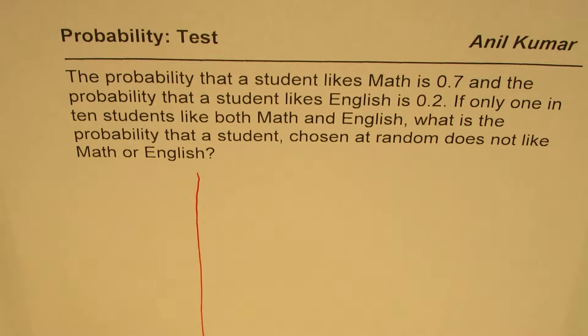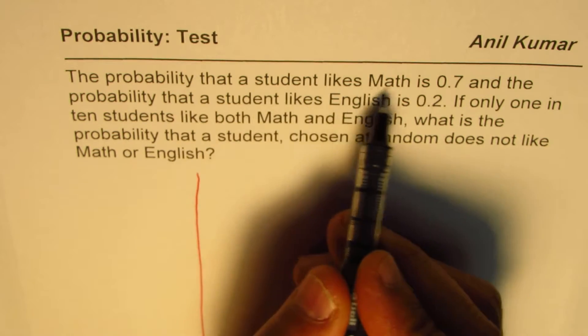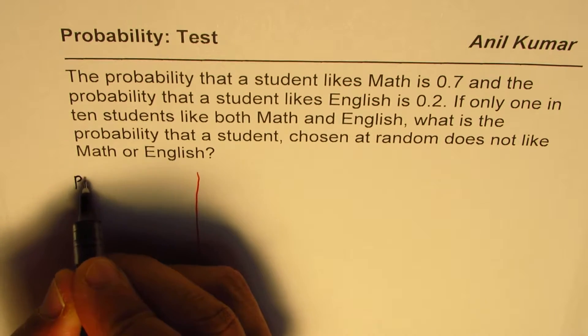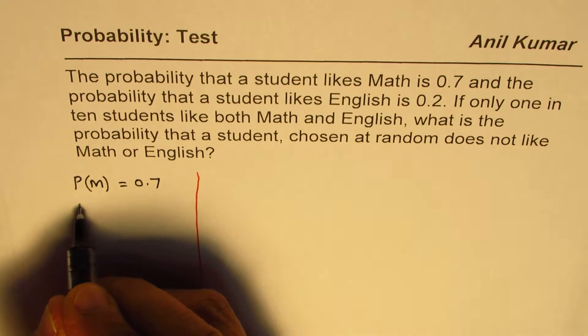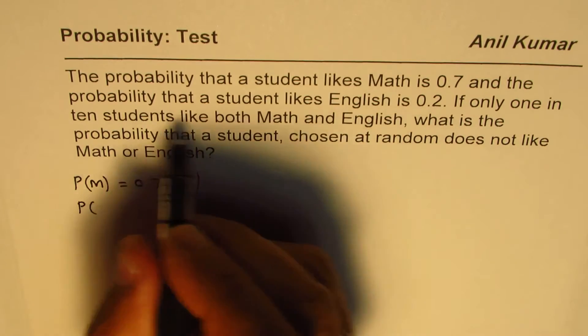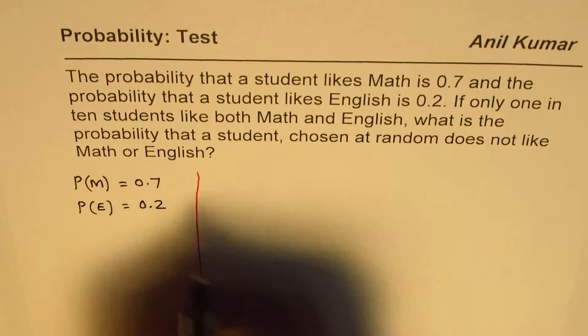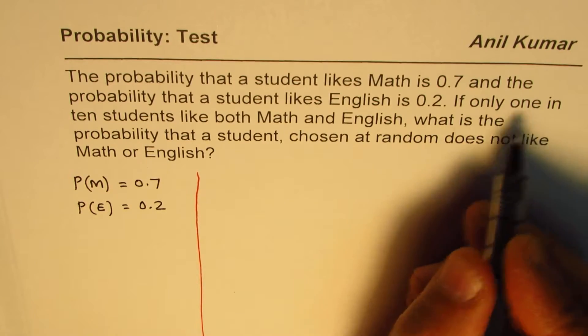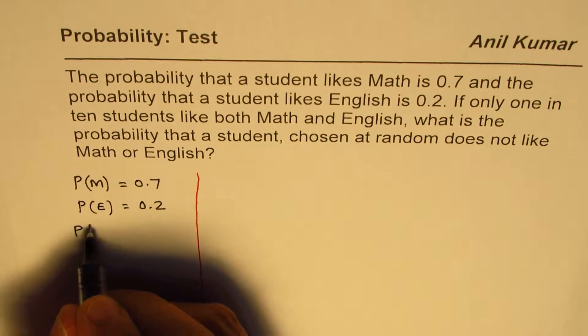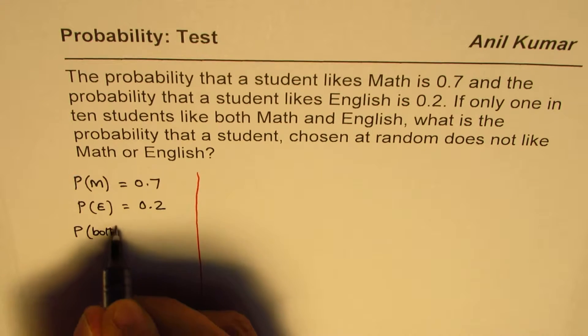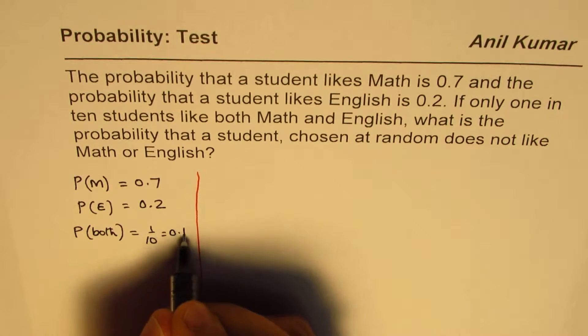Let me write down all the things which are given to us. Probability that a student likes math, let's say P(M) = 0.7, probability that student likes English P(E) = 0.2, and if only 1 in 10, 1 out of 10 likes both math and English, let me write P(both) is 1 out of 10, that is 0.1.